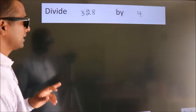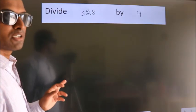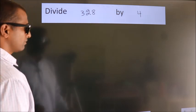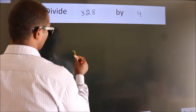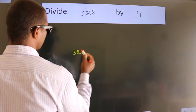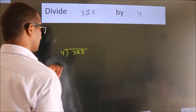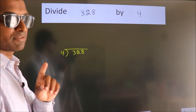Divide 328 by 4. To do this division, we should frame it in this way. 328 here, 4 here. This is your step 1.